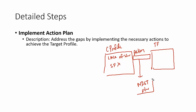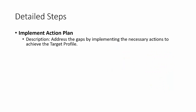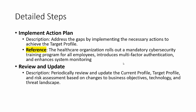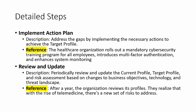The action plan involves adopting the NIST framework in sequence: introducing a cybersecurity program, making the firewall effective, ensuring everyone is trained on security awareness. The healthcare organization rolls out mandatory cybersecurity training for all employees, introduces multi-factor authentication, and enhances system monitoring. Then we do the review and update step — periodically reviewing and updating the current profile, target profile, and risk assessment based on business objectives, technology changes, and the evolving threat landscape, typically every six months to one year.